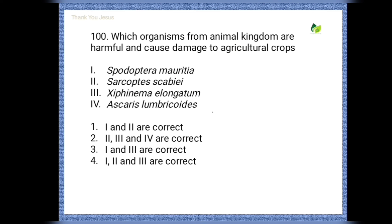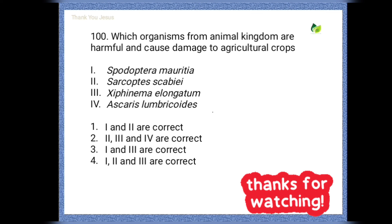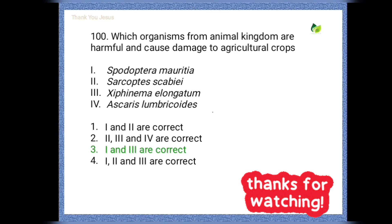Next question: which organisms from the animal kingdom are harmful and cause damage to agricultural crops? Options are: Spodoptera, Sarcoptes scabiei, Xiphinema elongatum, Ascaris lumbricoides. The correct option is the third one — that means Spodoptera and Xiphinema elongatum are the correct answers.